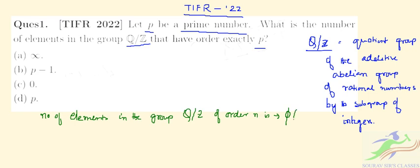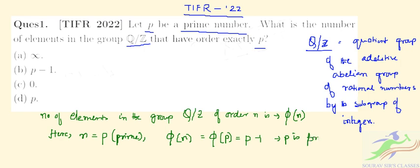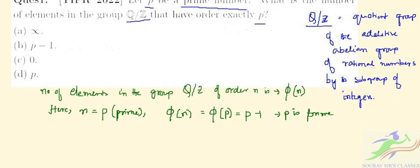So it will be phi of n. So here n is equal to P, which is a prime. So phi of n will be phi of P, which you can write as P minus 1. And here P is prime, so we can write it as P minus 1. From here you can see the option P minus 1 is correct.